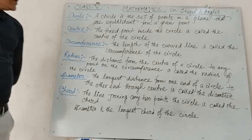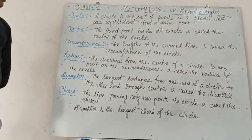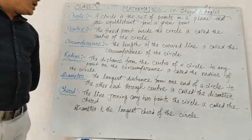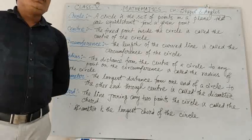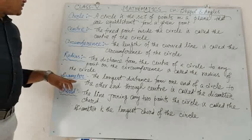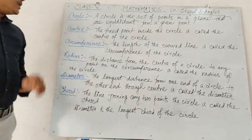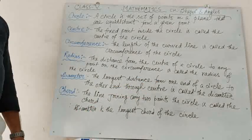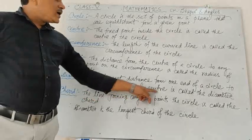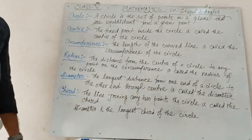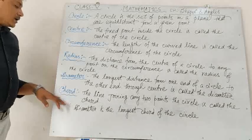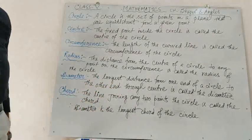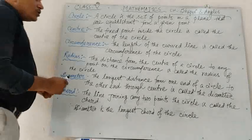Radius: the distance from the center of the circle to any point on the circumference is called the radius of the circle; we denote it by small r. Diameter: the longest distance from one end of a circle to the other end through the center is called the diameter. Chord: the line joining any two points on the circle.